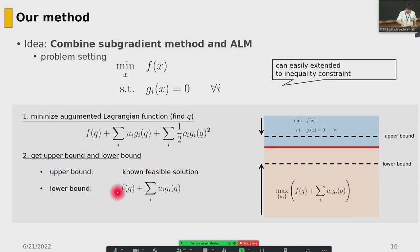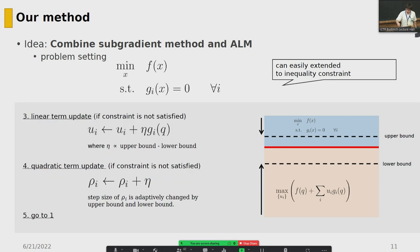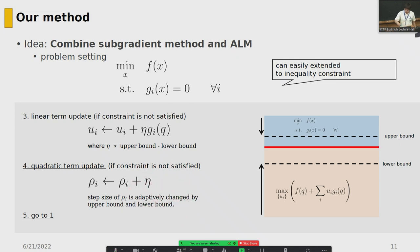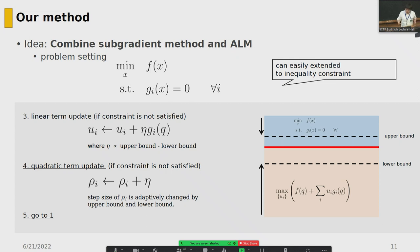For the upper bound, we use a feasible solution where the constraint is satisfied, or if there is no feasible solution, we set a sufficiently large value. The initial variables u_i and low_i are set to zero. Then we perform a linear term update, corresponding to the subgradient update when the constraint is not satisfied. The step size is proportional to the upper bound minus lower bound — equivalent to the duality gap. Then we perform a quadratic term update, corresponding to the augmented Lagrangian update, using variable eta inspired by the correspondence between low_i and eta. We repeat until the solution converges.